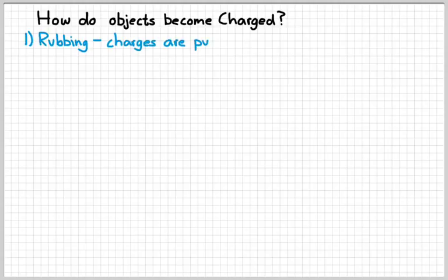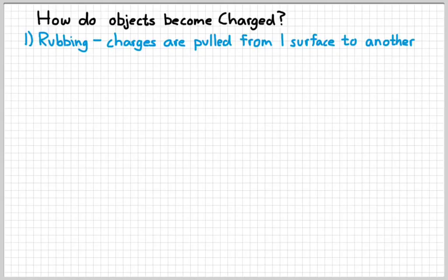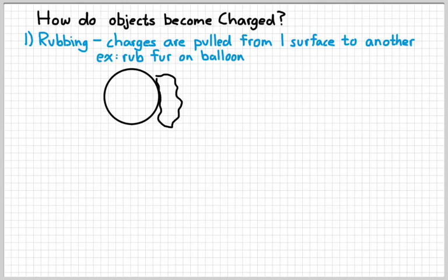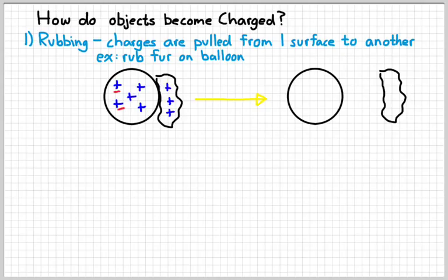So how do objects actually become charged if all things have charge to begin with? One way is to simply rub charges from one surface to another. This is basically based on a material's affinity to collect extra charges. So a good example of that is rubbing fur on a balloon, rubbing your sweatshirt on a balloon. So here's a picture of fur being rubbed on a balloon. Both the fur and the balloon start out with positive and negative charges. But afterwards, we would find more negative charges on the balloon than we would on the fur. Some of the negative charges are pulled onto the surface of the balloon. That makes the balloon negatively charged and the fur positively charged.